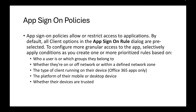App sign-on policies allow or restrict access to applications. By default, all client options in the app sign-on rule dialogue are pre-selected. To configure more granular access to the app, selectively apply conditions as you create one or more prioritized rules based on who the user is, which group they belong to, whether they are on or off the network, the type of client running on their device, the platform of their mobile or desktop device, or whether their devices are trusted.